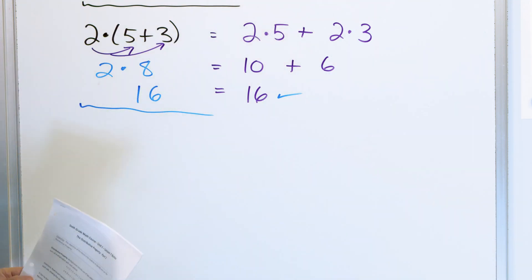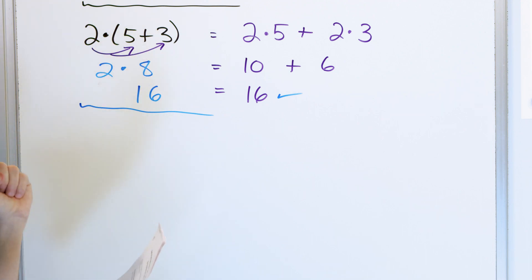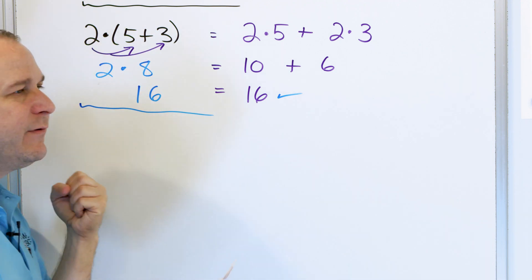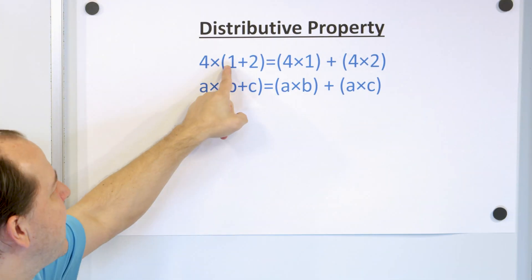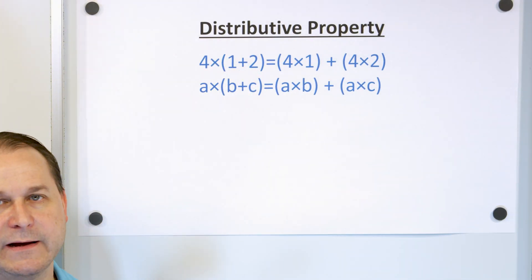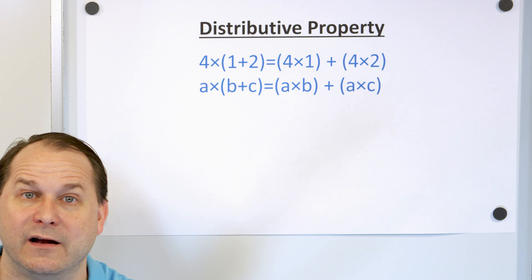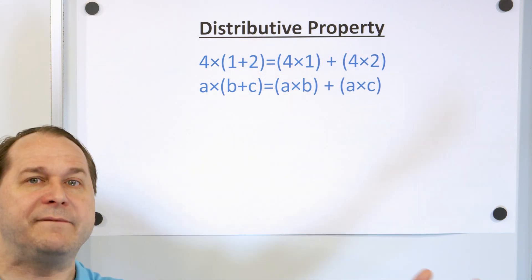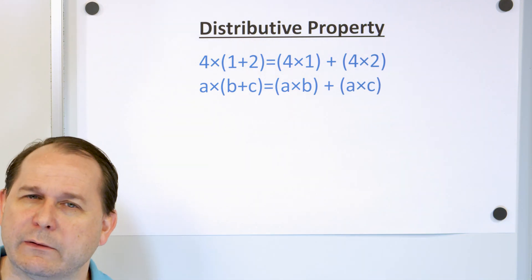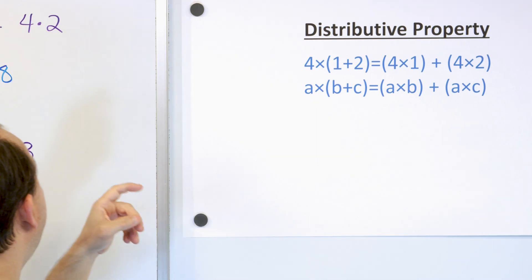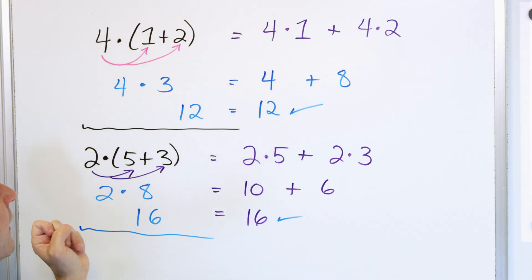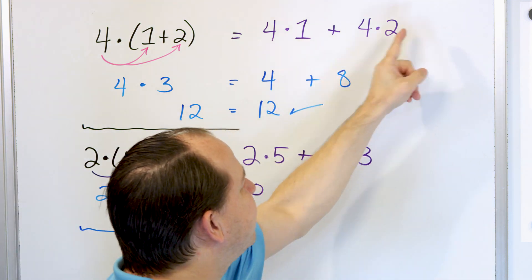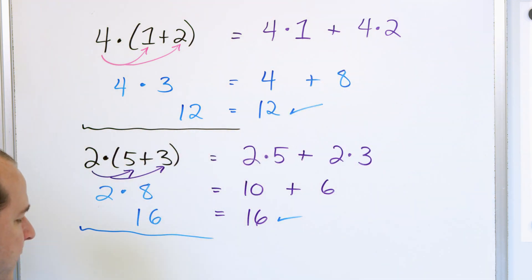This is true of any terms inside parentheses. Actually, here's a little preview: it's also true even if you have more than 2 things on the inside. If you had 3, 4, or 5 things on the inside, all that would happen is you'd keep multiplying the outside term by everything on the inside — you'd just have more multiplications, but that's what would happen.